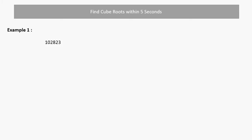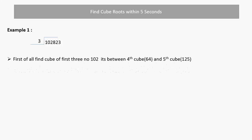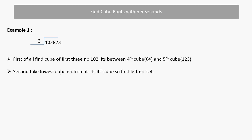At 102823, find the cube root of this number. First of all we have to find the first 3 numbers, that is 102, and the last 3 numbers are 823. So 102 is in between which cube numbers? 4 cubed is 64 and 5 cubed is 125. Since 125 is greater than 102, take the lesser number, which is 4. So the first digit is 4.